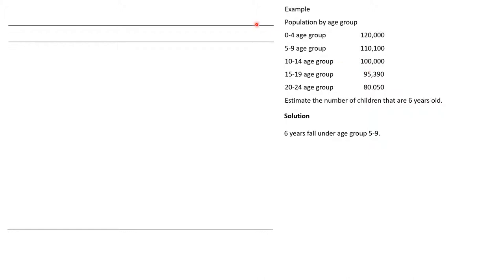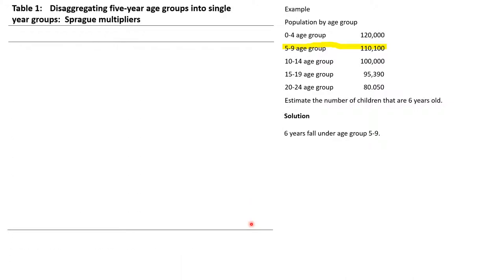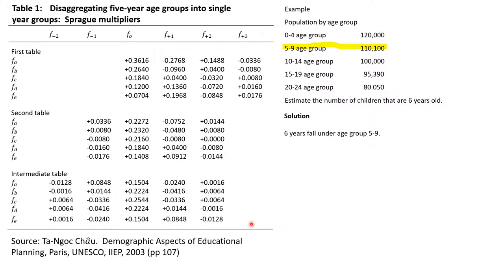Six years falls into the 5 to 9 age group because after five you have six — this group contains five, six, seven, eight, and nine. So the 5 to 9 group is the group under consideration. To estimate the population at age six, we now bring out our Sprague multiplier table and use it accordingly.